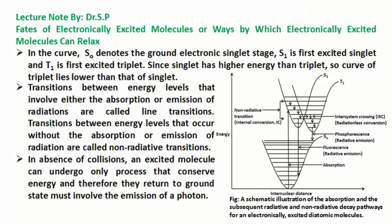S1 is first excited singlet and T1 is first excited triplet. Since singlet has higher energy than triplet, the curve of triplet lies lower than that of singlet.